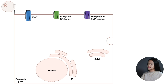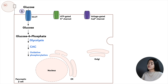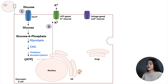When blood glucose levels increase, glucose transporters allow glucose into the pancreatic beta cells, where it's phosphorylated by glucokinase, or hexokinase 4, forming glucose-6-phosphate. Glucose-6-phosphate enters glycolysis, the citric acid cycle, and oxidative phosphorylation, yielding ATP.